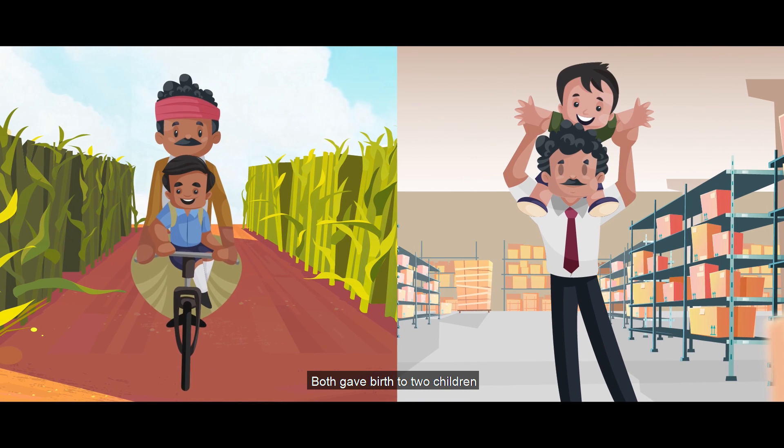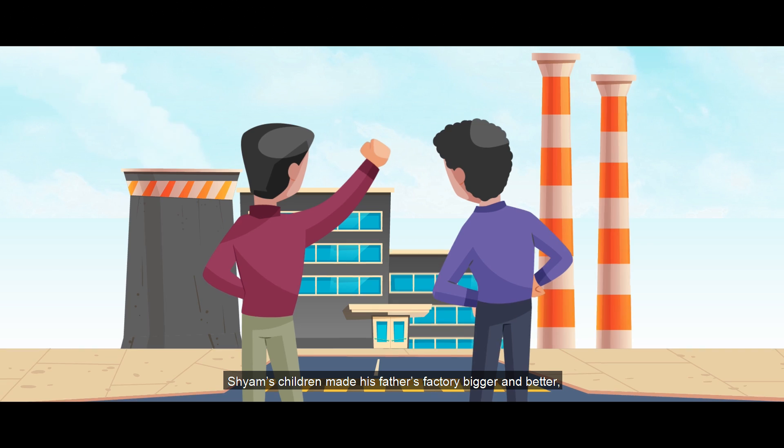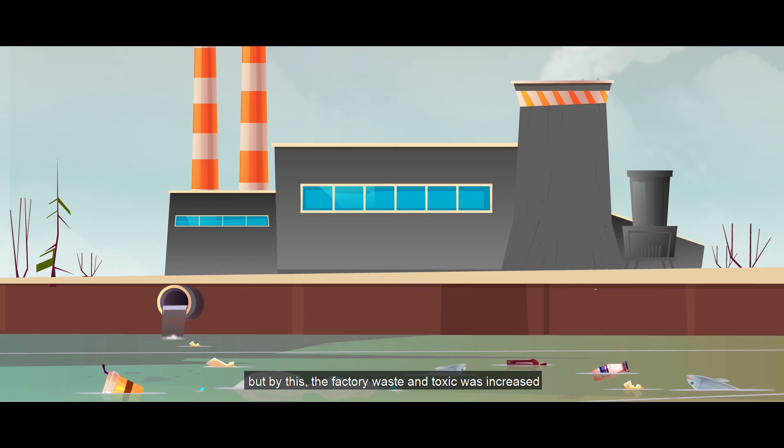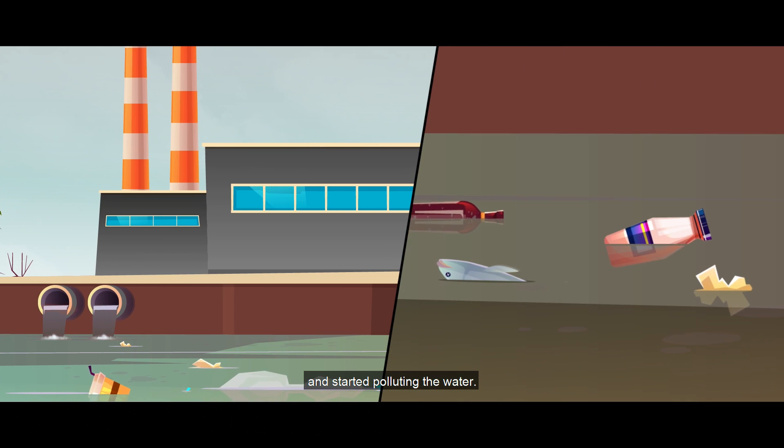Both gave birth to two children. Sham's children made his father's factory bigger and better. But by this, the factory waste and toxins increased and started polluting the water.